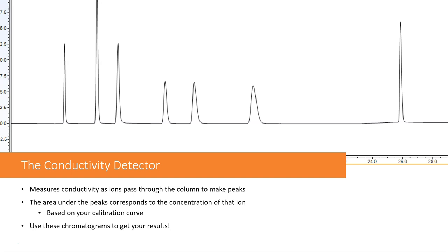The conductivity detector measures conductivity as ions pass through the column, and this makes peaks. As an ion passes through, the conductivity increases, and it can move on to the next ion. The area underneath these peaks corresponds to the concentration of that ion, and this is based on your calibration curve.